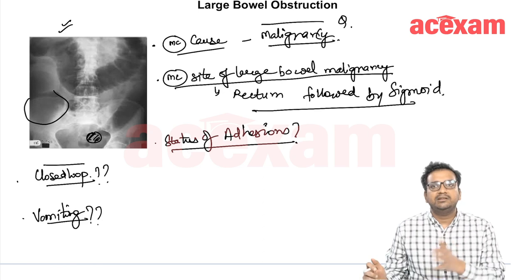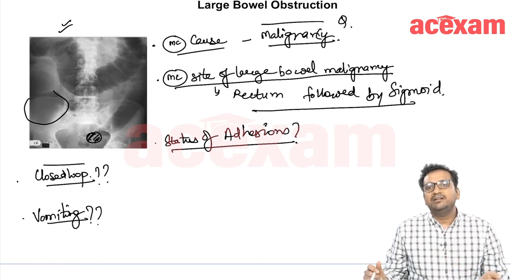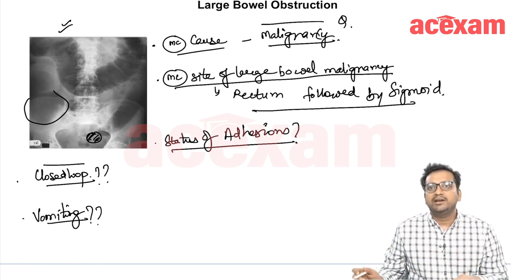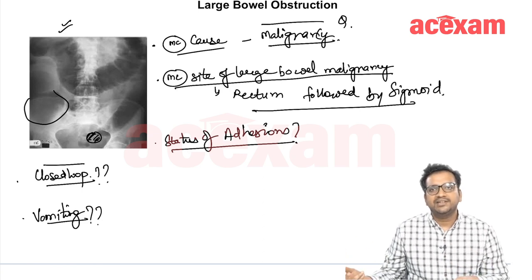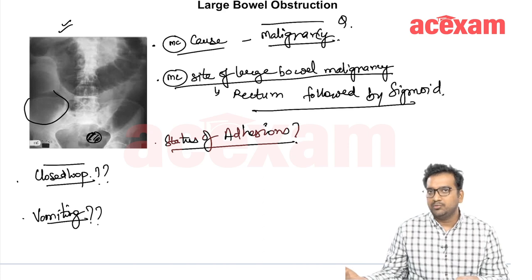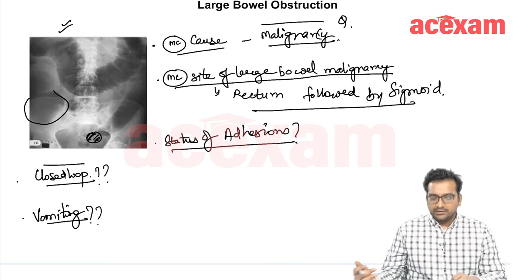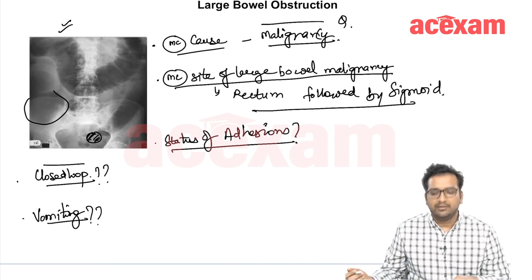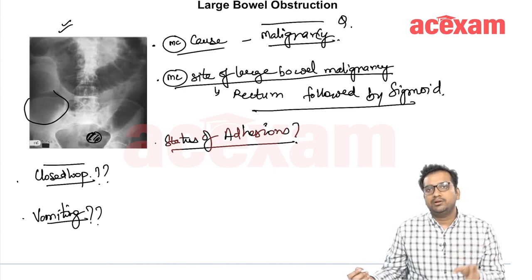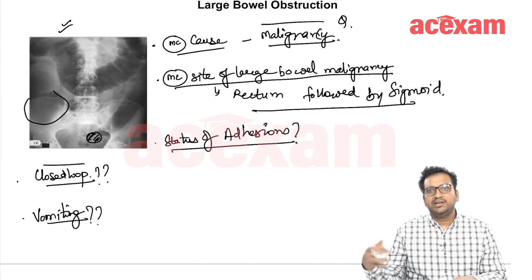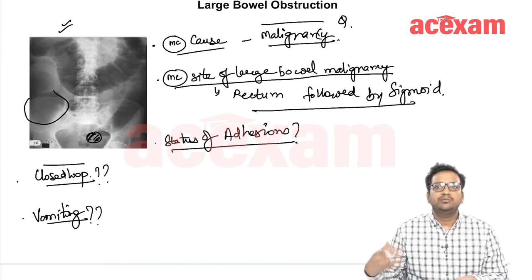Obstruction is also more common in these malignancies because right-sided malignancies are generally cauliflower-like and not stricturing type. Whereas the left-sided malignancies — malignancies in the rectum as well as sigmoid — they are stricturing type, so that is why they cause more obstruction. Also, cecal malignancy is not going to cause obstruction generally, due to the larger lumen of the cecum. That is the reason why obstruction is more common in recto-sigmoid malignancies.